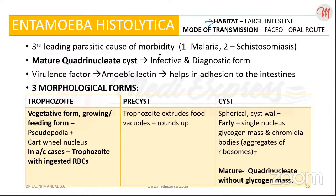Talking about Entamoeba histolytica, there are something you need to know about the morphological forms. The parasite exists in three morphological forms: one is a trophozoite, the other is a pre-cystic stage, and lastly, we have the cyst.